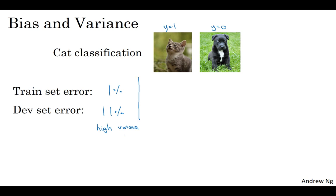Now, let's say that you measure your training set and your dev set error, and you get a different result. Let's say that your training set error is 15%, and your dev set error is 16%. In this case, assuming that humans achieve roughly 0% error, that humans can look at these pictures and just tell if it's a cat or not, then it looks like the algorithm is not even doing very well on the training set. So if it's not even fitting the training data it's seen that well, then this is underfitting the data, and so this algorithm has high bias. But in contrast, this is actually generalizing at a reasonable level to the dev set. Its performance on the dev set is only 1% worse than performance on the training set. So this algorithm has a problem of high bias because it's not even fitting the training set well.